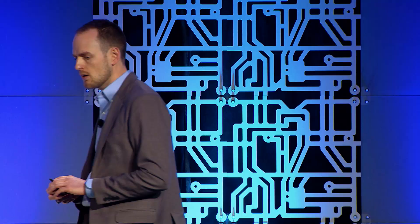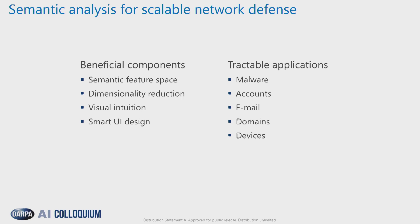This is exactly the place where we want to take our pairing of AI with the cyber defense problem — making sure our AI research is capturing the necessary domain context. In summary, we've built a semantic feature space that captures what's going on, employed dimensionality reduction to make sense of the semantics captured within that space, gained scalability from that dimensionality reduction, gained a visual intuition, and used UI design to bring in the other domain context that analysts need to formulate hypotheses. And while we've spent a lot of time talking about one particular application, there are many tractable applications where this could bear fruit for cybersecurity — including malware, accounts, emails, domains, and devices.